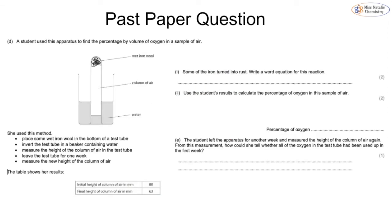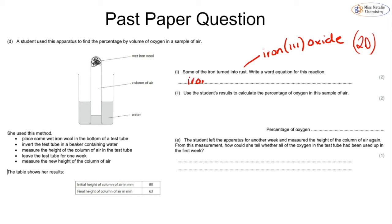A student places wet iron wool in the bottom of a test tube, inverts it in a beaker of water, measures the height of the air column, and leaves it for a week before measuring again. The water level rises as oxygen is used up. The word equation for the rusting reaction is: iron + oxygen → iron(III) oxide. To calculate the percentage of oxygen: volume of oxygen used = 80 − 63 = 17 cm³. Percentage of oxygen = (17 ÷ 80) × 100 = 21%.